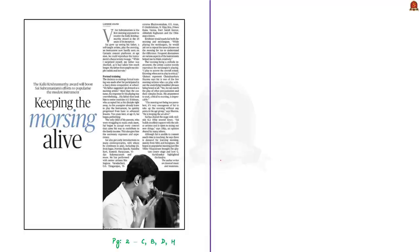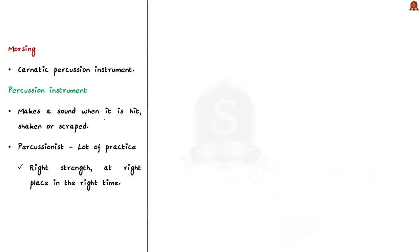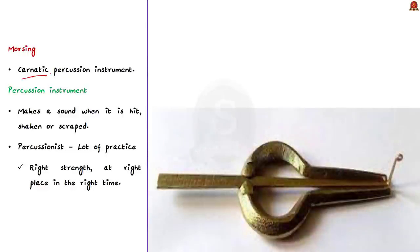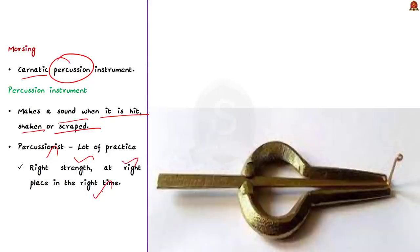Now let us take up this article about V. Sai Subramaniam, who has become the first morsing exponent to receive the Kalki Krishnamurti award. Let us see important facts about morsing, a melodic instrument seen on Carnatic concert platforms. The morsing is a Carnatic percussion instrument — a percussion instrument refers to any instrument that makes a sound when it is hit, shaken, or scraped. It is generally not easy to be a percussionist as it takes a lot of practice to hit an instrument with the right strength at the right place and at the right time.